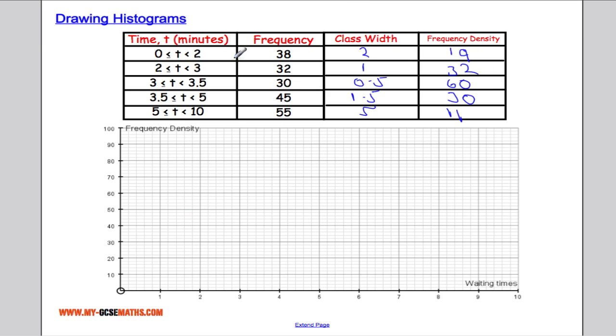Right, so between 0 and 2 minutes had a frequency density of 19, so I'm going to come along and draw a box up as far as 19 between 0 and 2.